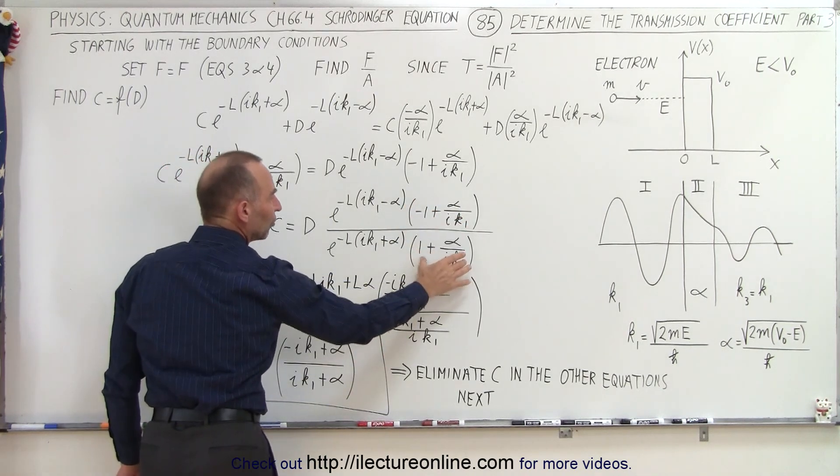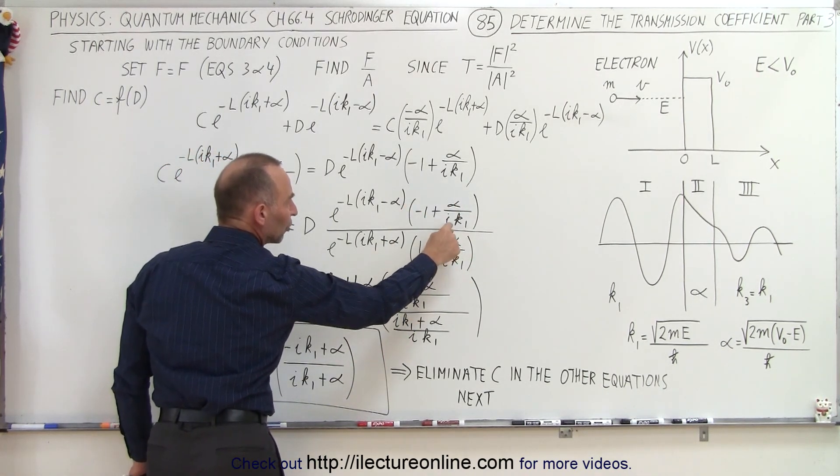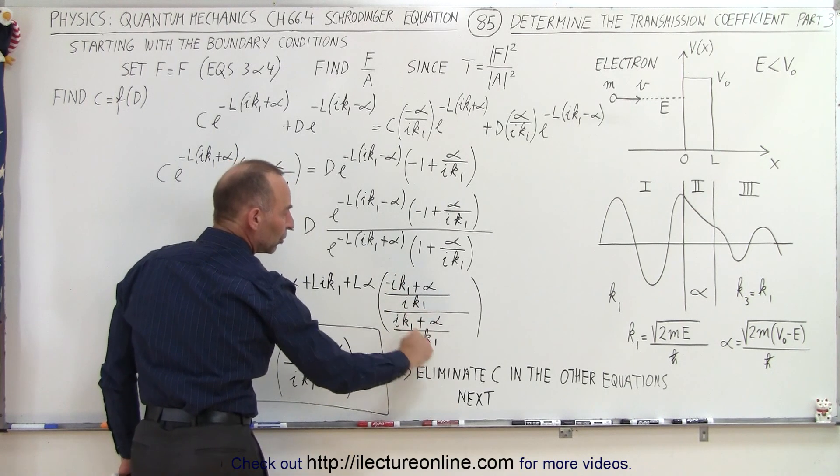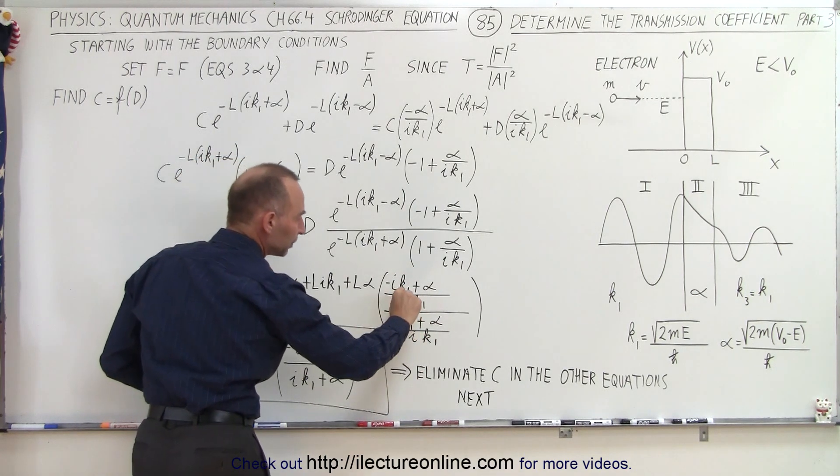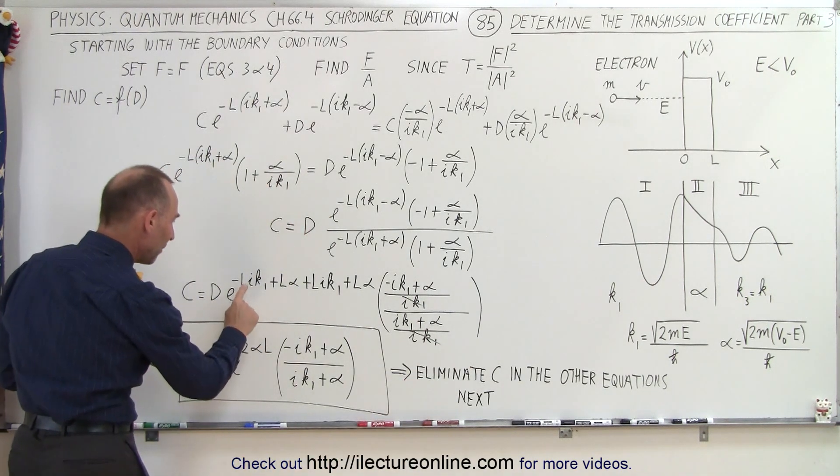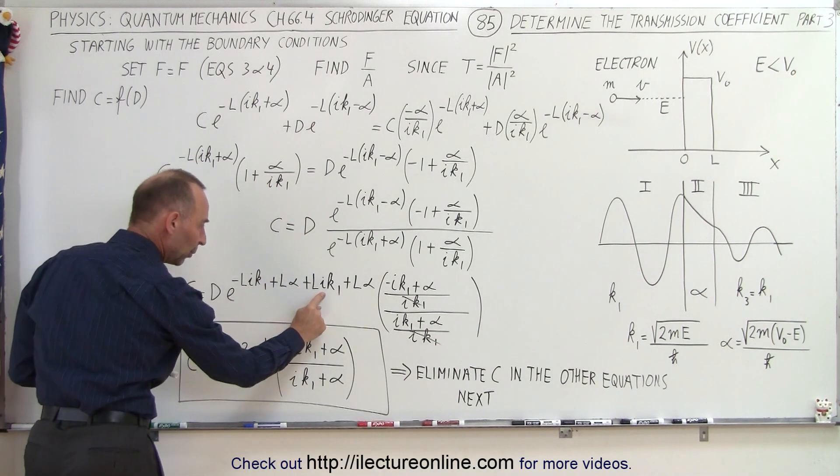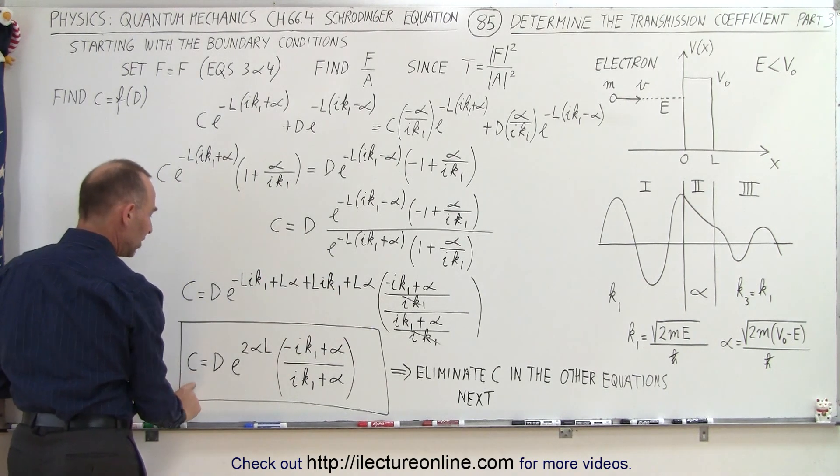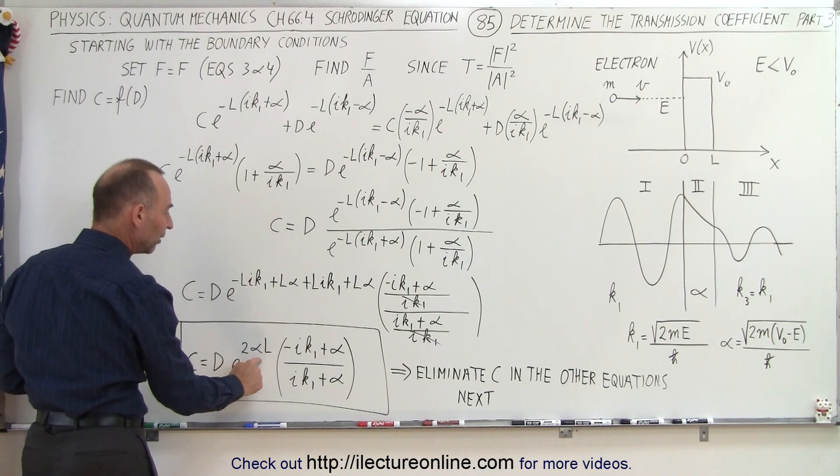We have this divided by this, so we're going to take the common denominator, which is IK1. When we do that, notice both of these denominators can cancel out. Then we're left with, notice we have a minus L IK1 and a plus L IK1, they cancel out, and we're left with two of these, so we have C equals D times E to the 2 alpha L.